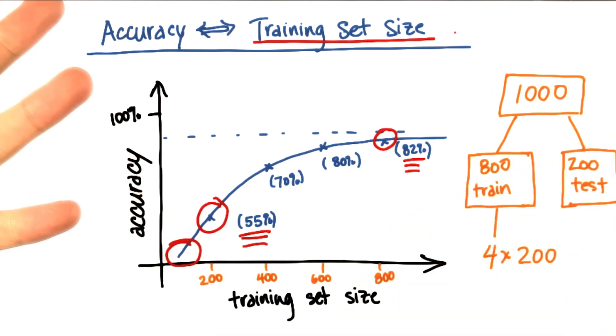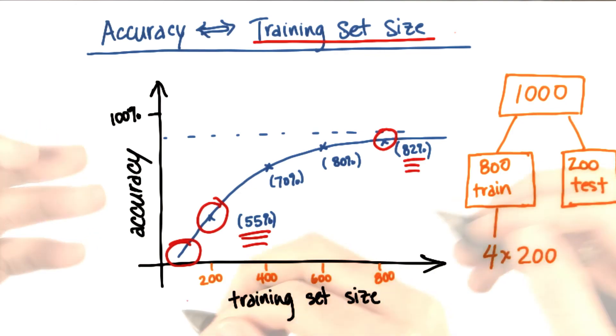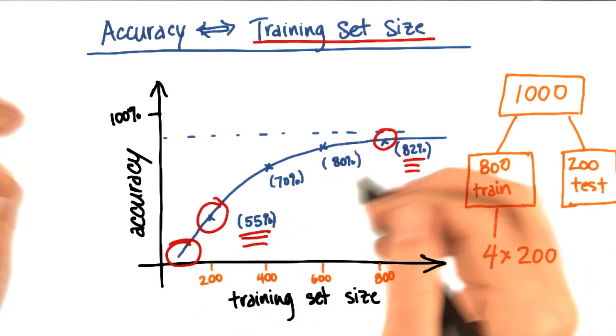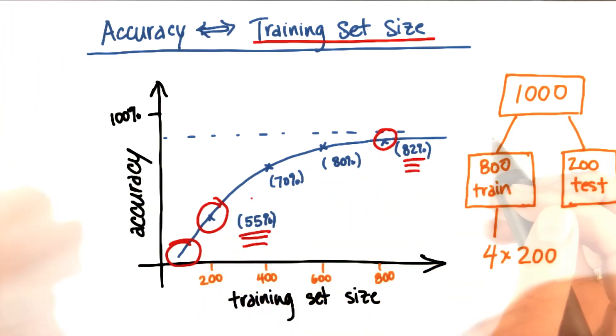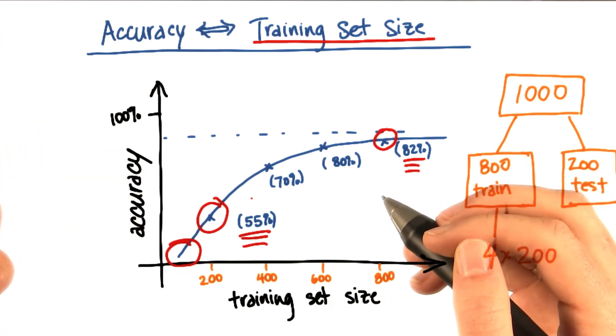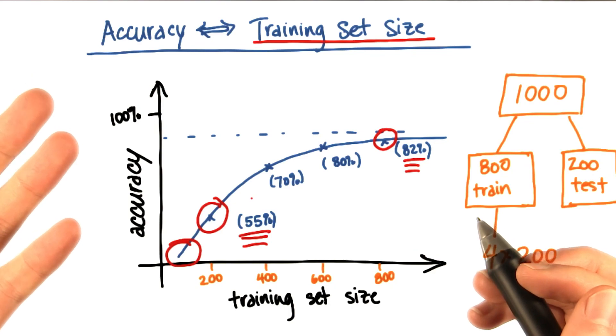But ideally, if you're working in a situation, say the self-driving car, where you have the option of asking a question like this: how does the accuracy change with the number of training events? And especially if you have the power to go out and collect more data if you need it, this can be an extremely useful series of questions to ask.